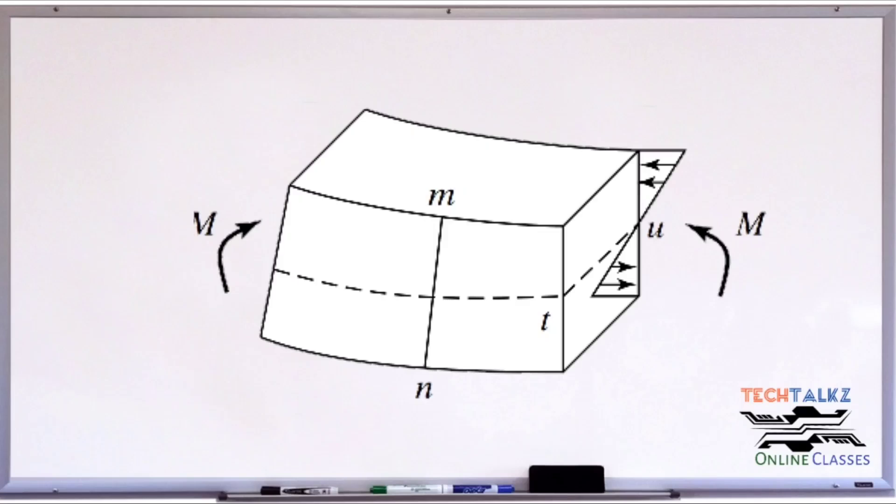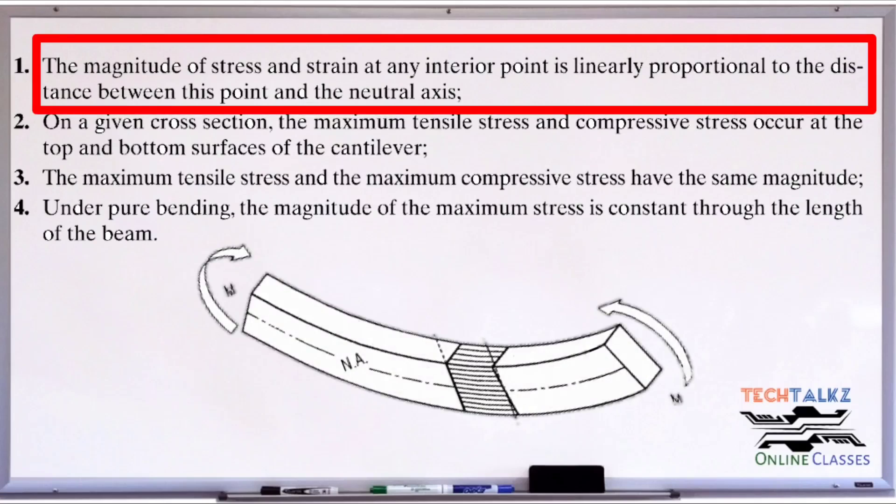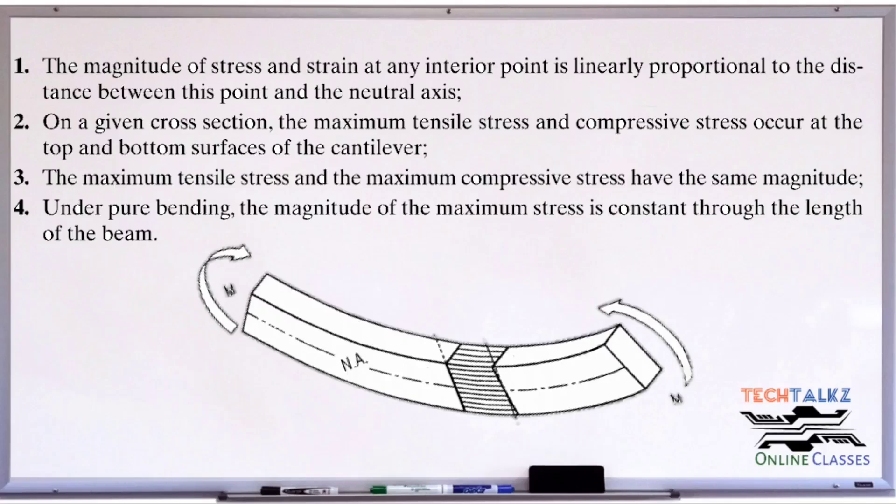In this pure bending analysis, let's take a few points. The first point is: the magnitude of stress and strain at any interior point is linearly proportional to the distance between the point and the neutral axis. If you are using this case, let's apply the load. This is the flexural bending. This is the middle portion, the middle plane, that is the neutral plane. It is neither elongation nor compression. From the upper plane to the neutral plane, we have compression. From the lower plane, we have elongation.